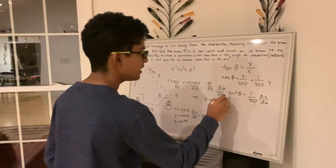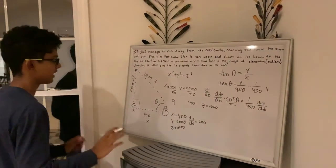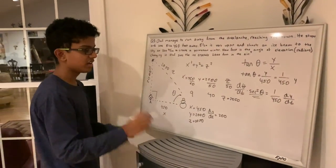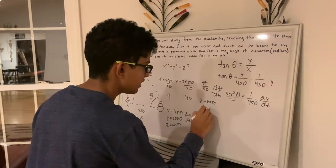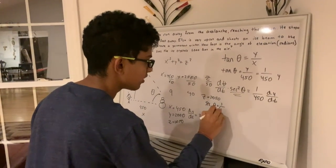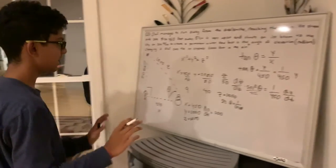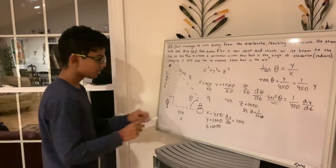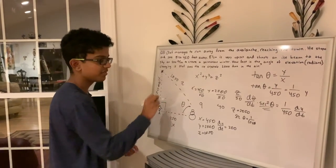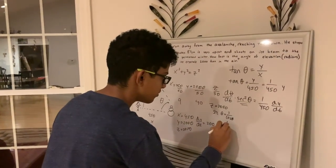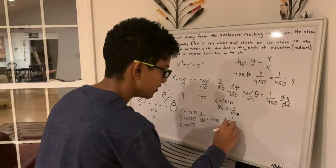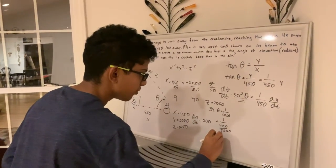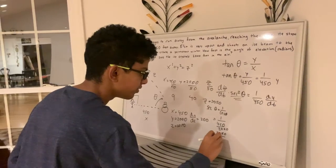So we need to find what secant squared theta is. So here we look at the triangle. First, we know secant equals 1 over cosine. And we can find the cosine. Cosine is adjacent over hypotenuse. So that's 450 over 2050, and since it's the reciprocal, it would be 2050 over 450.